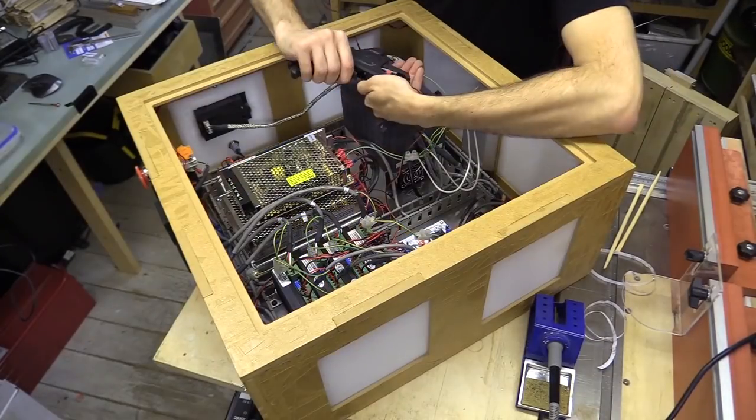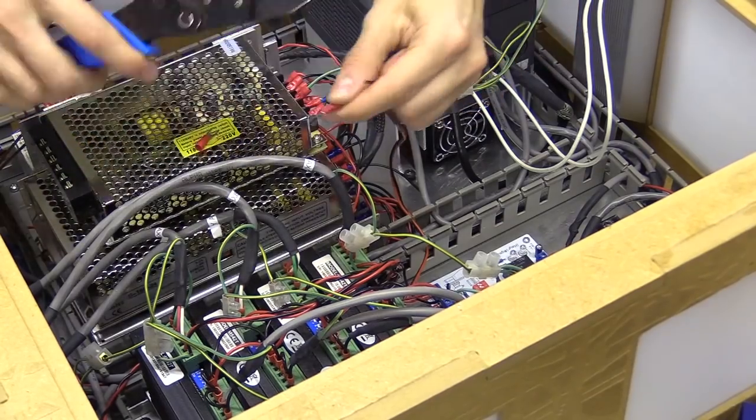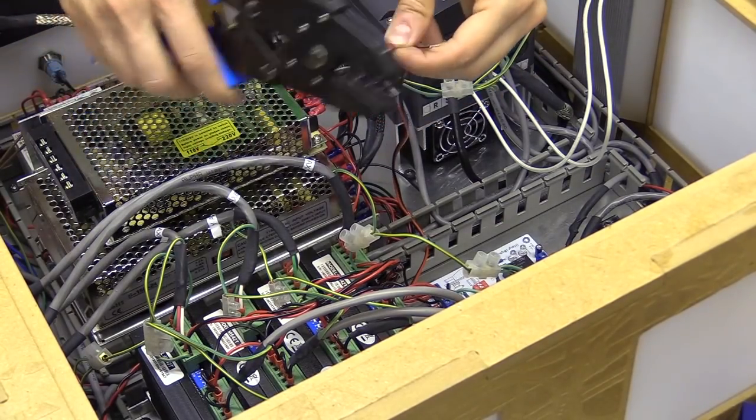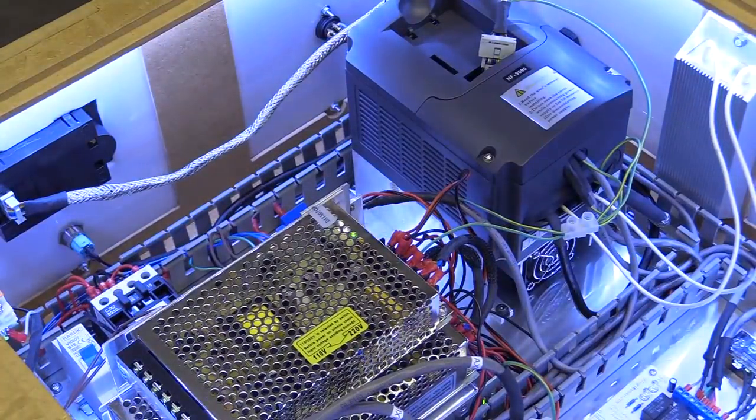I then attached some fork crimps to the ends of the wires and screwed those onto my 12v power supply unit terminals. The LED strip needs a transformer that converts the AC from the mains into DC to power the lights.